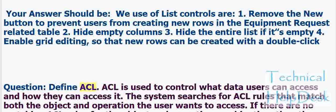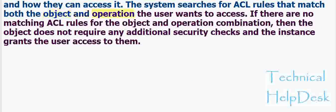Define ACL. ACL is used to control what data users can access and how they can access it. The system searches for ACL rules that match both the object and operation the user wants to access. If there are no matching ACL rules for the object and operation combination, the object does not require any additional security checks and the instance grants the user access.